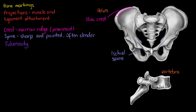The tuberosity is a little bit different. A tuberosity is a large and round projection that is often quite roughened. Looking at the bottom of the ischium, we can see this ischial tuberosity here has quite a rough surface and is very large as well. That is called the ischial tuberosity.